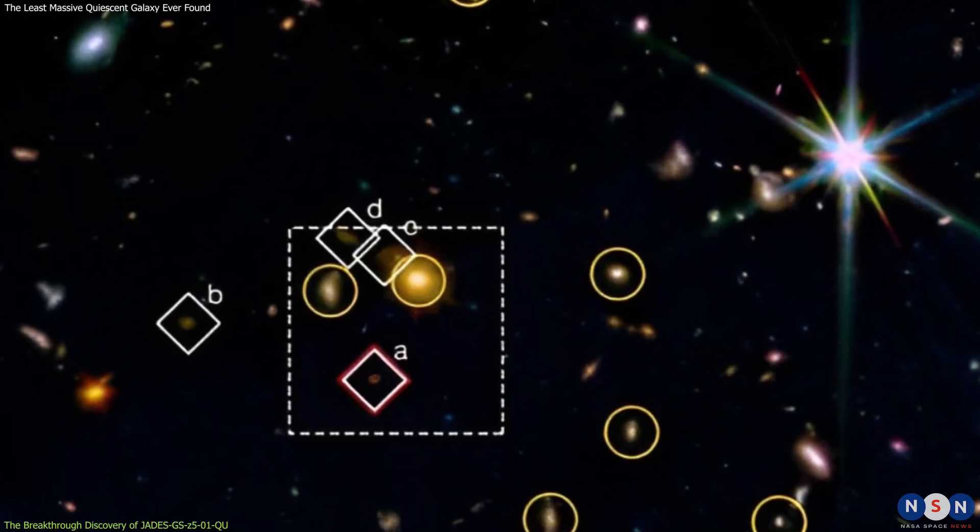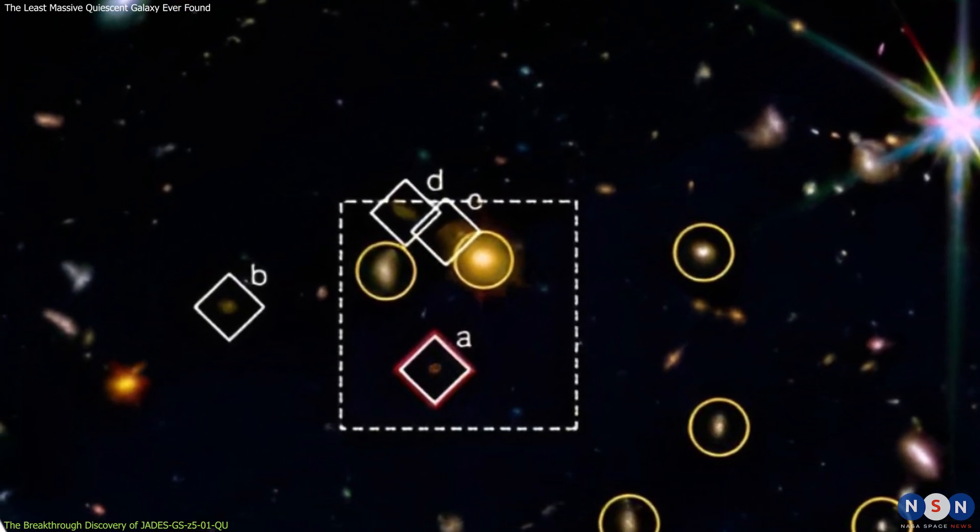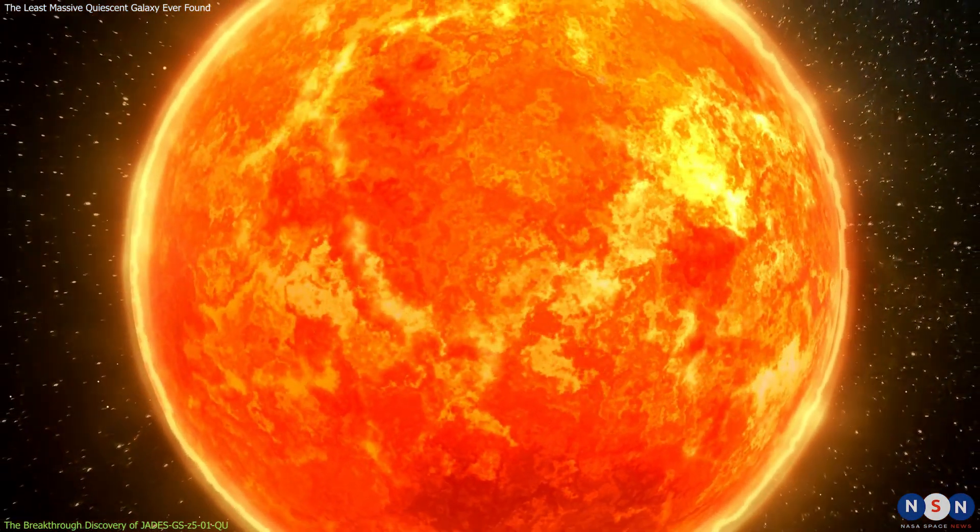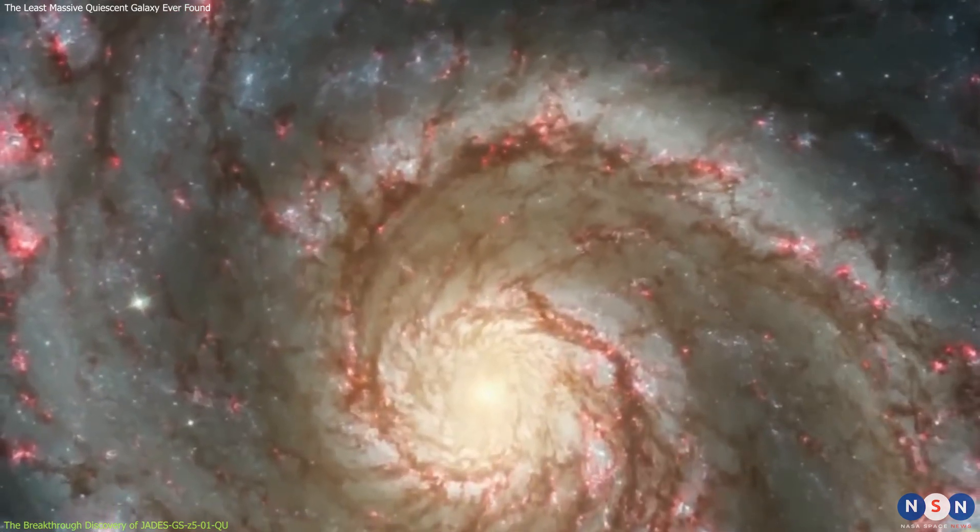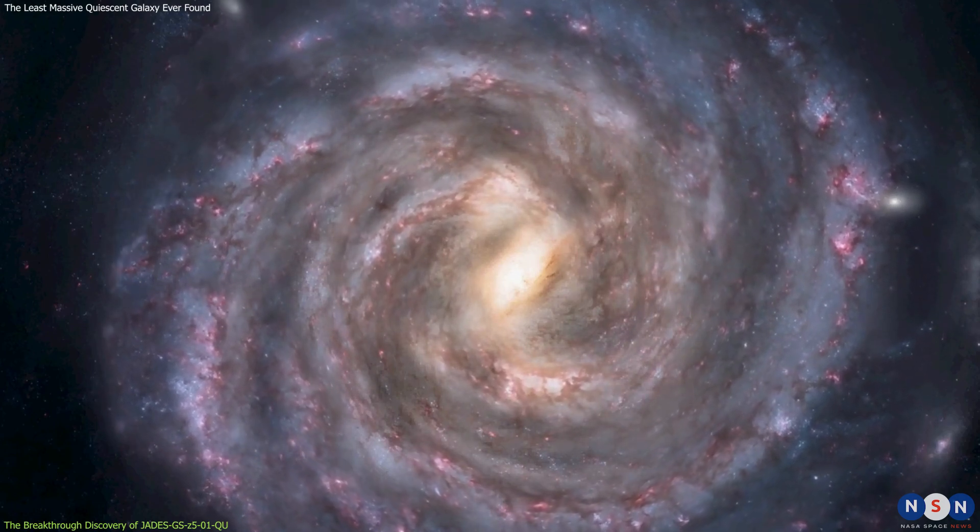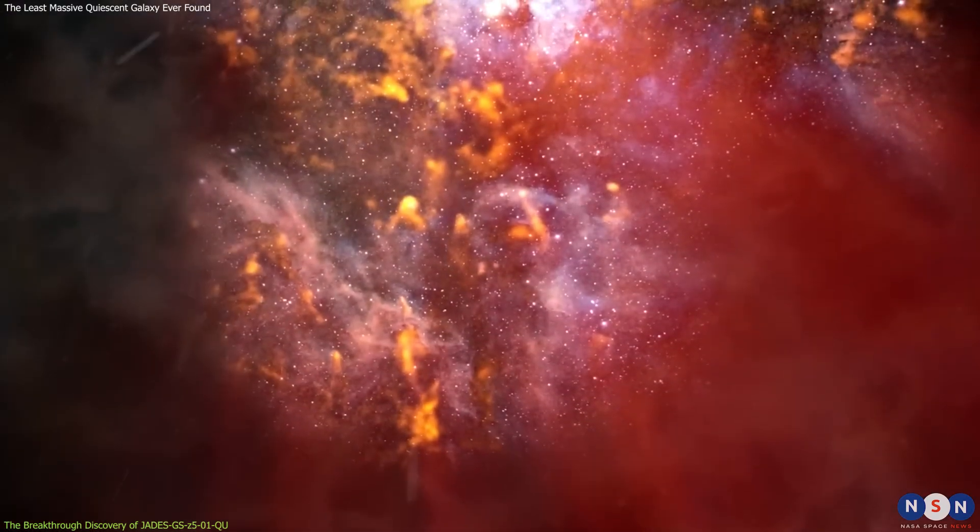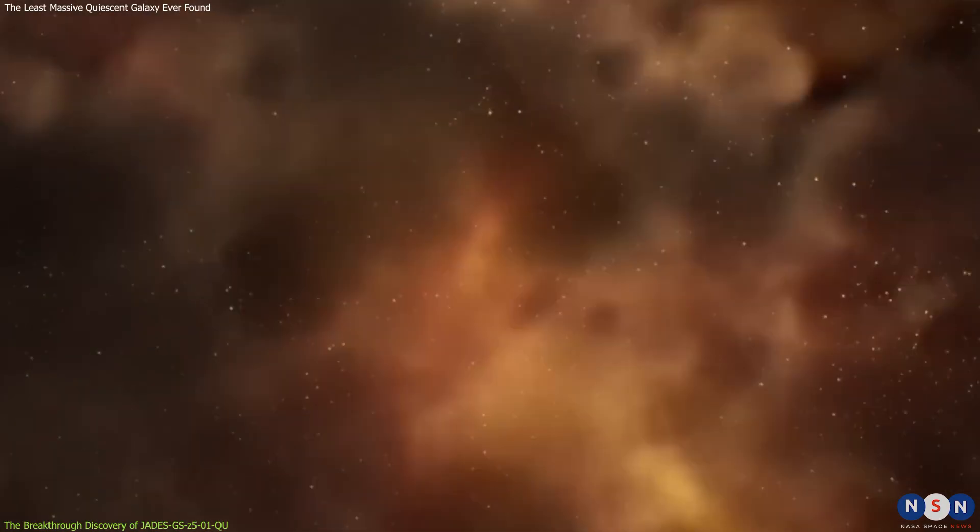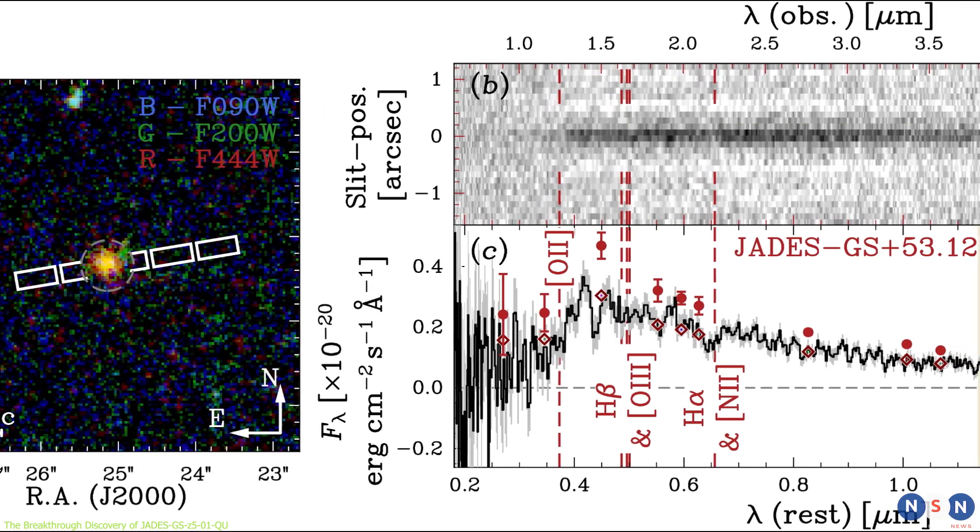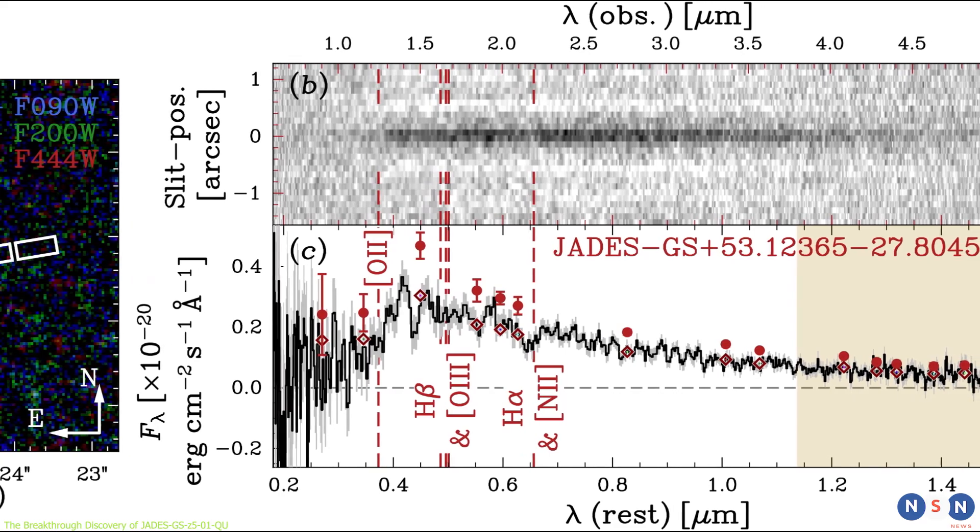What makes this galaxy so special and surprising is that it is the least massive quiescent galaxy ever found at such a high redshift. The galaxy has a stellar mass of only about 10 billion times the mass of the Sun, which is much lower than the typical mass of quiescent galaxies at similar or lower redshifts, which is usually above 100 billion times the mass of the Sun. The galaxy also has a very low star formation rate, less than one solar mass per year. It also shows a strong Balmer break and a weak Lyman alpha emission line in its spectrum, which are indicators of an old and quiescent stellar population.